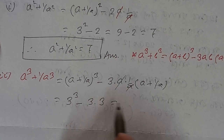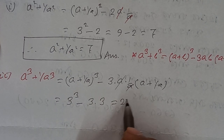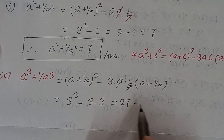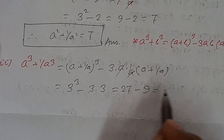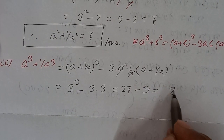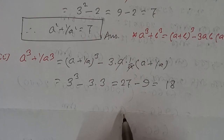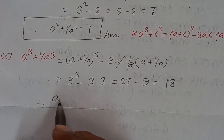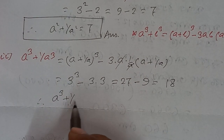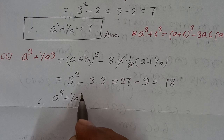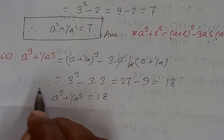Substituting, we get 3 cube minus 3 times 1 times 3, which is 27 minus 9 equals 18. Hence, a cube plus 1 by a cube equals 18.